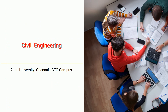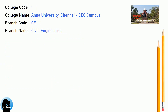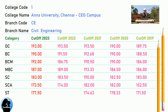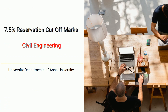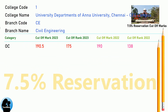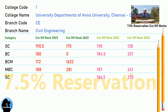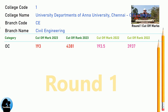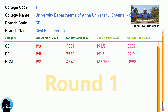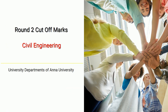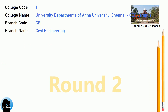DNA Cut-Off for Anna University Chennai CEG Campus in Civil Engineering. DNA 7.5 Reservation Cut-Off for Anna University Chennai CEG Campus in Civil Engineering. DNA Round 1 Cut-Off for Anna University Chennai CEG Campus in Civil Engineering. DNA Cut-Off for Anna University Chennai CEG Campus in Civil Engineering.